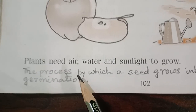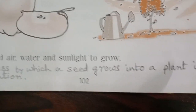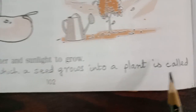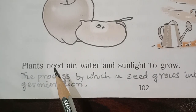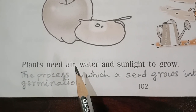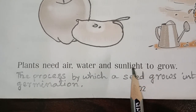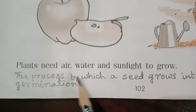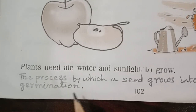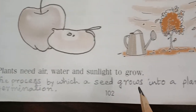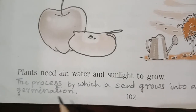The process by which a seed grows into a plant is called germination. After getting air, water and sunlight, the seed grows into a plant, and this process is known as germination.